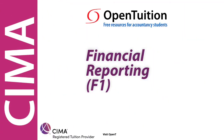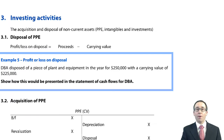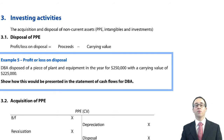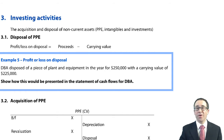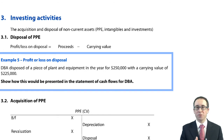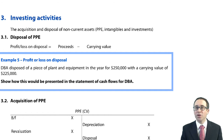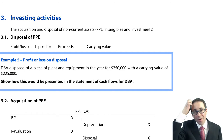This is a lecture from OpenTuition. To benefit from the lecture you should download the free lecture notes from OpenTuition.com. Following on from our operating activities, we're going to look at investing activities, which at this level is buying PPE, selling PPE, and also interest or dividends received from investments we may have made.